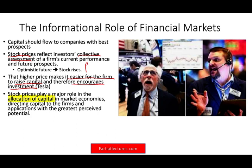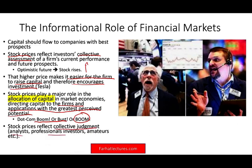Directing capital to firms with the greatest potential could also be wrong — it's not a science. Think about the dot-com era: many people invested money in companies that did not survive a year or two during the dot-com boom and bust in 1999, 2000, and 2001. Some companies survived, like Amazon, but many others went bust. The stock price is not always correct — it represents the collective judgment of analysts, professional investors, and amateurs, but it is not always right. This is one way the financial market helps: it gives us information about where to invest.